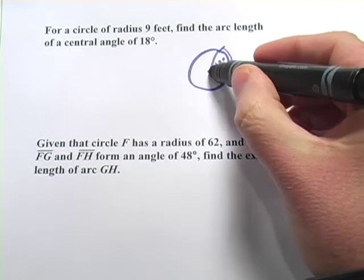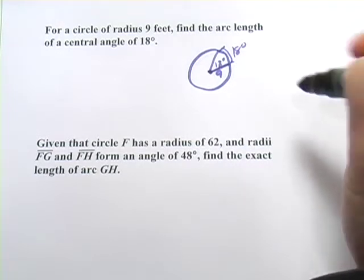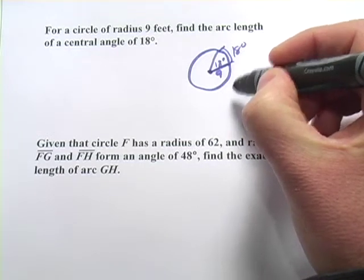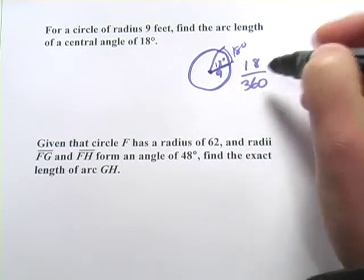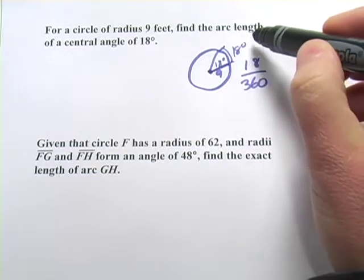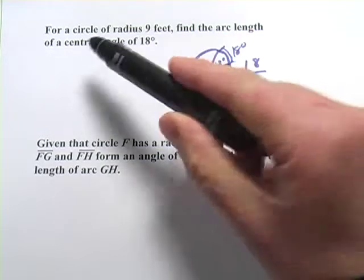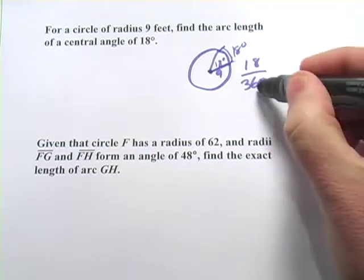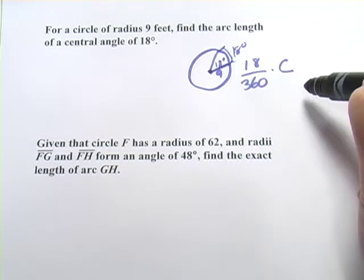You might remember that when you have a central angle, the degrees of the angle are the same as the degrees of the arc length. If you wanted to find out what proportion of the whole circle this was, you would put that over 360. So 18 three hundred and sixtieths of this circle is what we've got there. Now we want to find the arc length of this angle here for a circle of radius 9 feet. So we're going to have this times the whole circumference. So this is the fraction of the whole circumference, so we want to multiply that by the circumference.